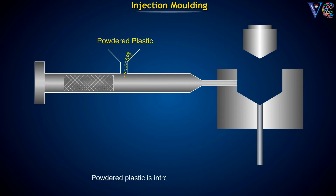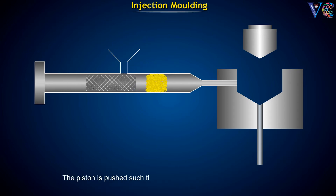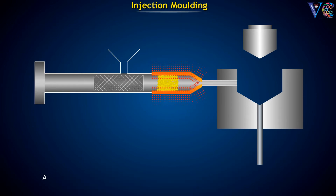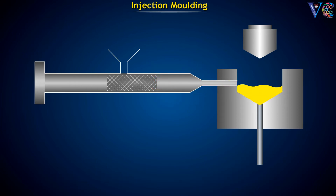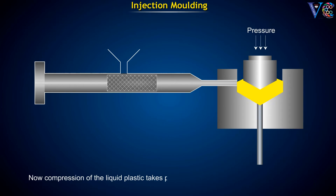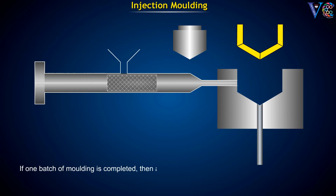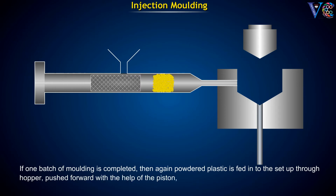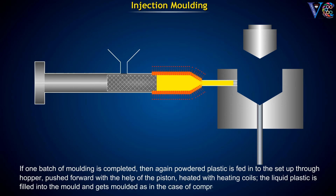In injection molding, plastic is introduced into the barrel of the injection setup through a hopper. The piston is pushed such that the powdered plastic moves forward, where it is heated with the help of heating coils. As a result, the powdered plastic melts and is further pushed into the mold. Compression of the liquid plastic takes place to give the article of the desired shape. Once one batch is complete, powdered plastic is again fed through the hopper, pushed forward by the piston, heated, and the liquid plastic is filled into the mold and gets molded.